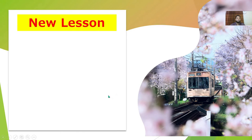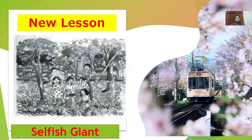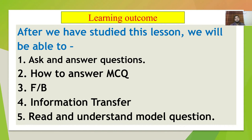So let us start with the new lesson today. Can you guess what the new lesson will be? Yes, there is a picture. Some children are in the garden, some are in the tree, some are on the ground. Can you guess the topic of today's lesson? It is from your EFT book. Yes — Selfish Giant. Thank you so much. So let us start with this new lesson today.